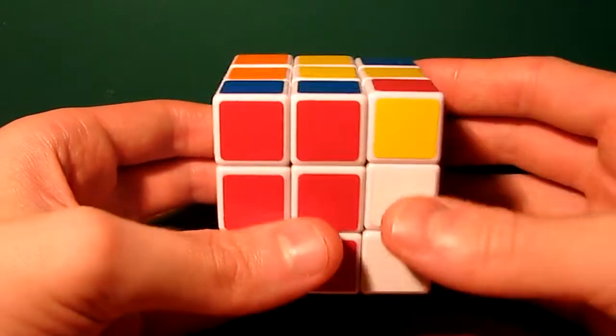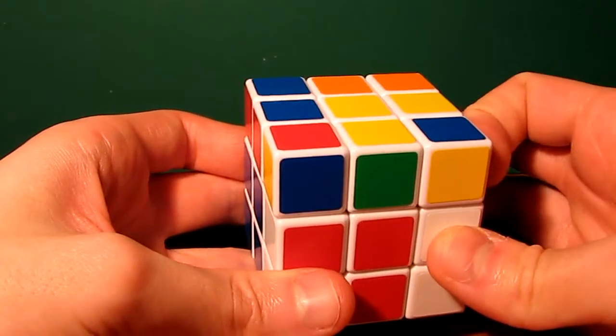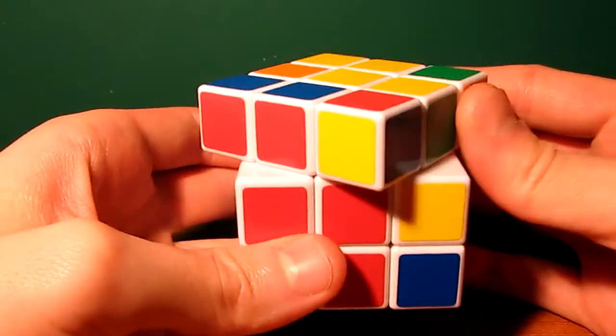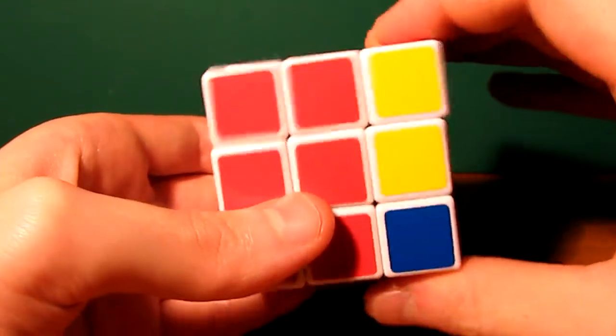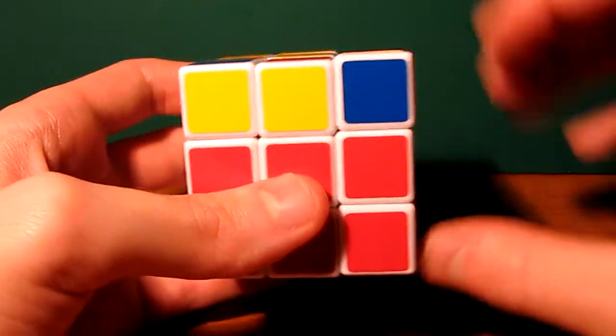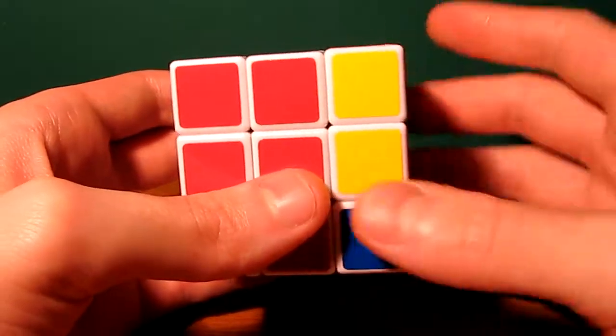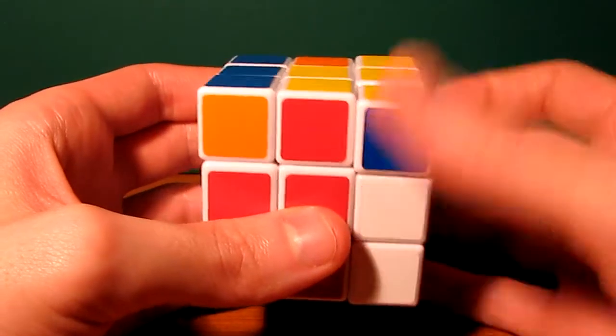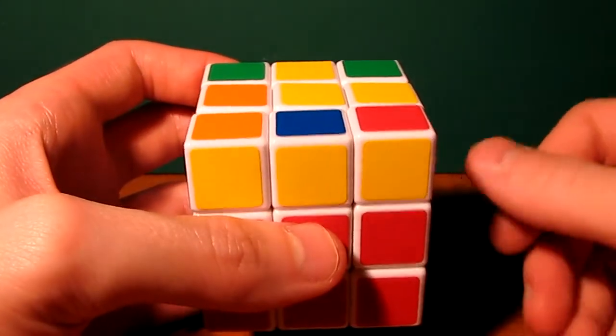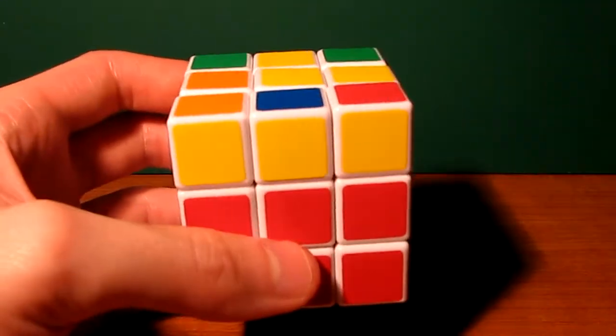We're going to move this pair out of the way temporarily in the top layer. We're going to move the right layer back, and we're going to put that pair back in and then put everything back to the way we started. So a little faster, we have front, right, up, R prime, U prime, front. There's the notation for you as well if you're wondering.